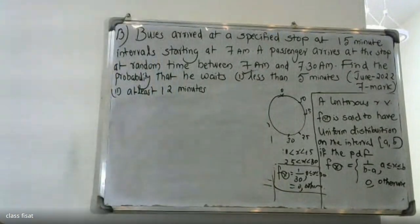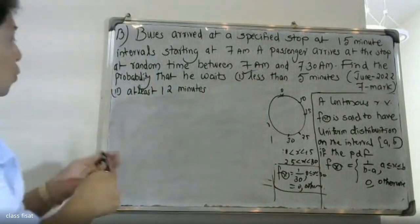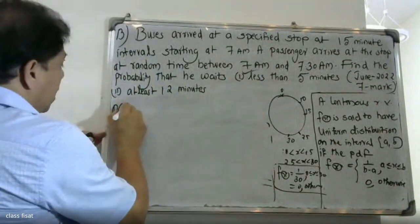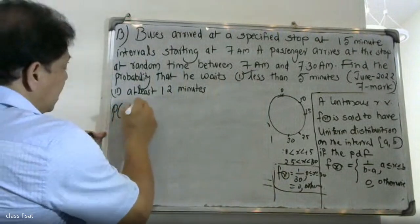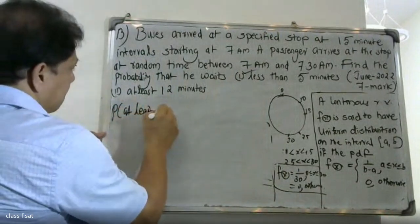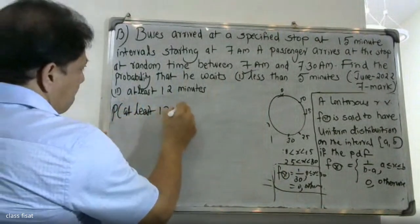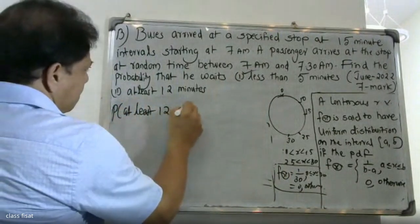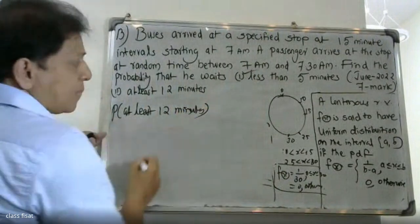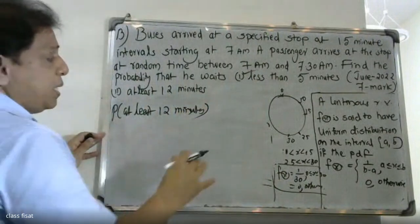For question two: the probability of waiting at least 12 minutes. At least 12 minutes means we integrate over the appropriate region.